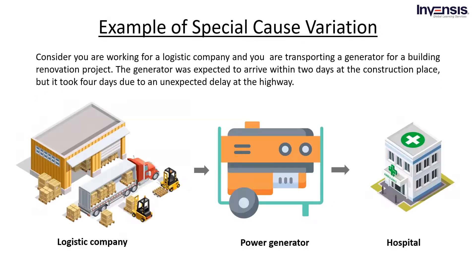Consider an example of special cause variation: you are working for a shipping company transporting a generator for a building renovation project. The generator was expected to arrive within two days at the construction site, but it took four days due to an unexpected delay on the highway. These random and unpredictable events can occur during a business process and represent special cause variation.